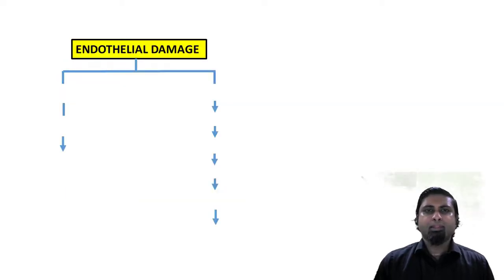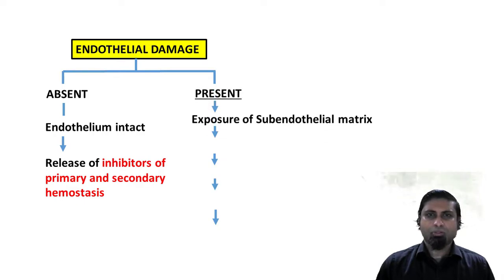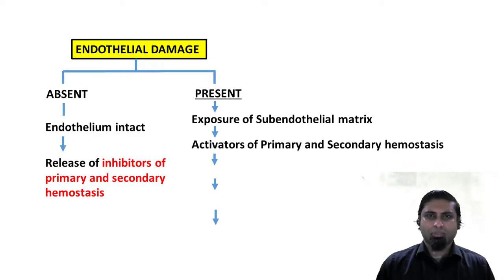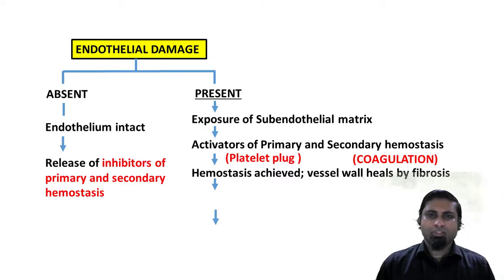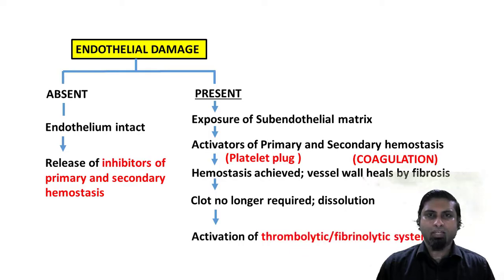In the absence of endothelial damage, the intact endothelium releases various inhibitors of primary and secondary hemostasis. If the endothelium is damaged, there is exposure of the sub-endothelial collagen causing activation of primary and secondary hemostasis, resulting in the formation of a platelet plug and a fibrin mesh. Once hemostasis is achieved, the vessel heals by fibrosis, the clot is no longer required, and should be eliminated by the fibrinolytic or thrombolytic pathway.